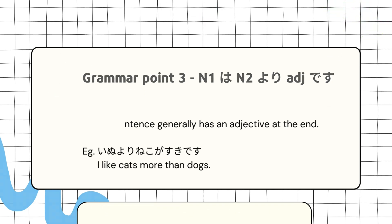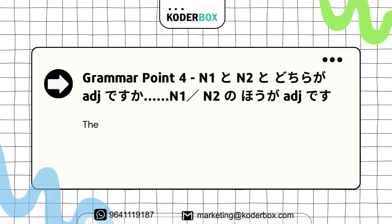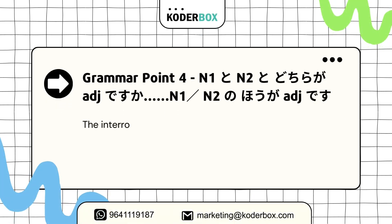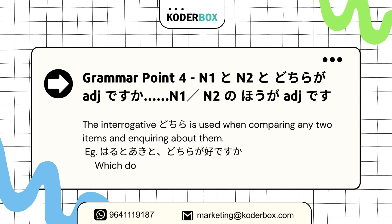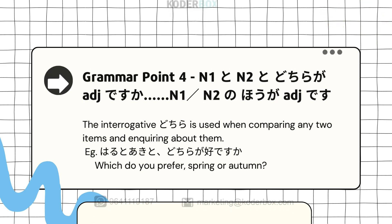Grammar point four: N1 to N2 to dochira ga adjective desu ka. N1 or N2 no ho ga adjective desu. The interrogative dochira is used when comparing any two items and inquiring about them. Example: Haru to aki to dochira ga suki desu ka. Which do you prefer, spring or autumn?